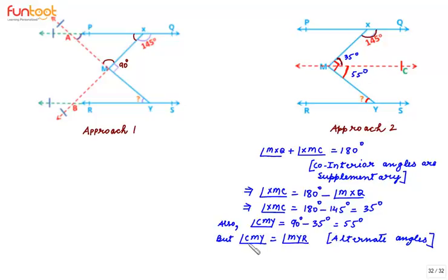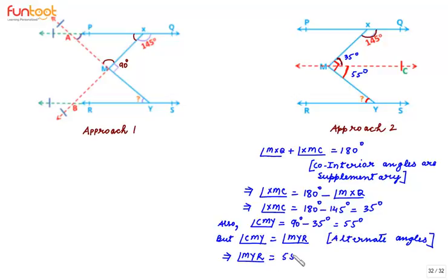So angle CMY is equal to angle MYR, as these are alternate angles. This implies angle MYR equals angle CMY, which we have found to be 55 degrees. So the measure of angle MYR is 55 degrees.